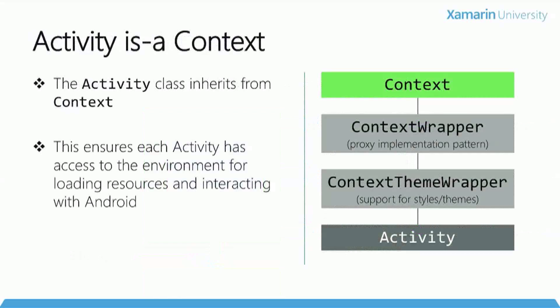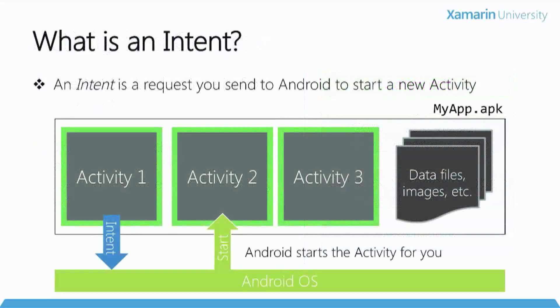Context is so important that Activity inherits from Context. So as an activity, you are a context, and all those services we just discussed are available to you as inherited members. An Intent is the thing you use to start an activity — you can think of it as a request. You create an intent object, load information into it, and send it off to Android. Android looks at what you put inside the intent and decides which activity to start for you. It's Android that actually starts the activity — you don't do it directly.